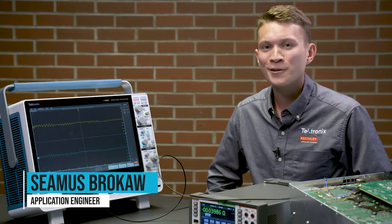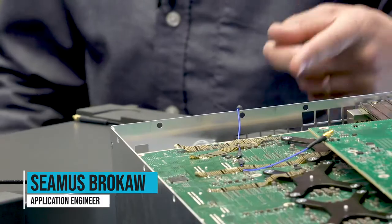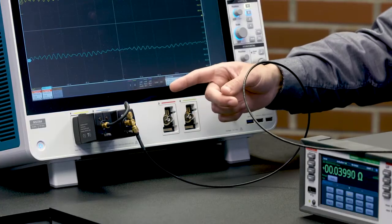Today I'm going to show you how to make accurate current measurements on a power rail using a shunt and two Tektronix power rail probes.